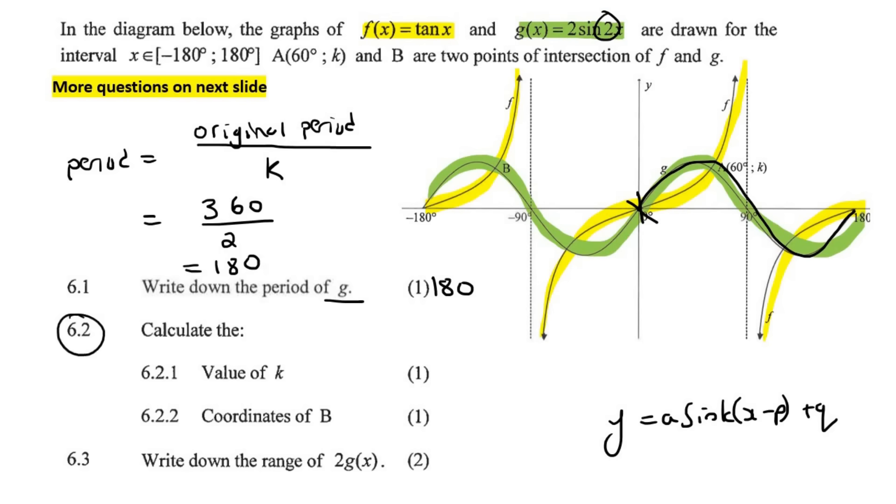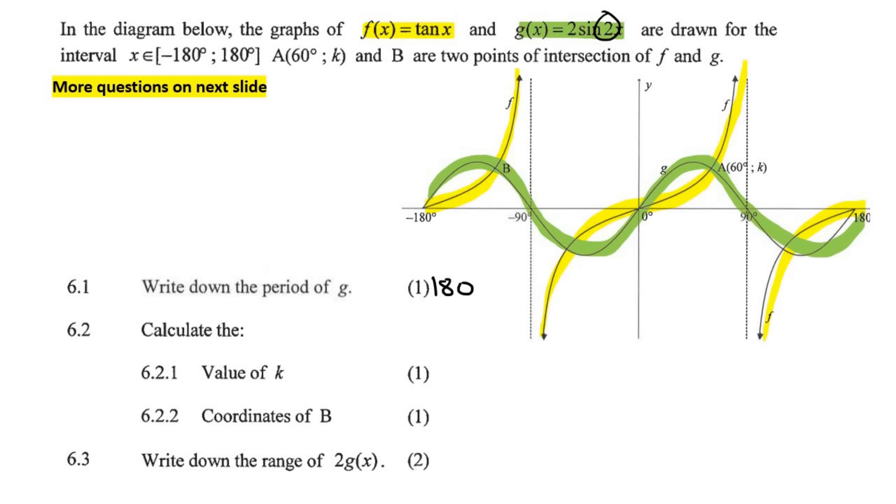This one says, calculate the value of k. Which k are they talking about? Oh, they're talking about this k, I see. So the point A is, it says point A and B are two points of intersection. Oh, so it's on both graphs. So this is a very easy question. Because you know the X value, but you just need the Y value. So you can just plug it into the equation. So f of 60. So you're just letting X equal to 60. Go ahead, type that on your calculator.